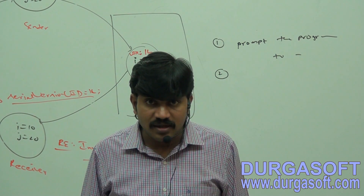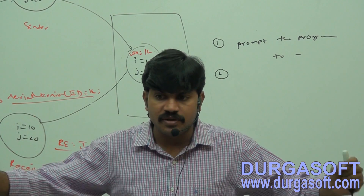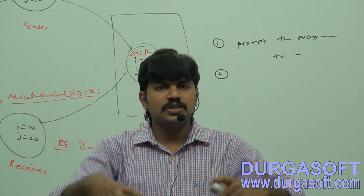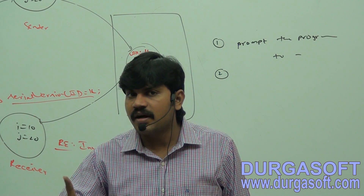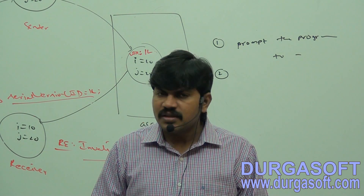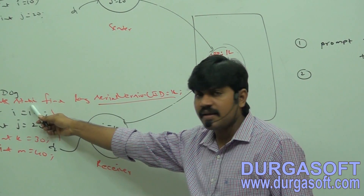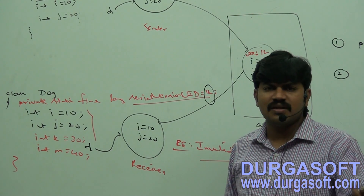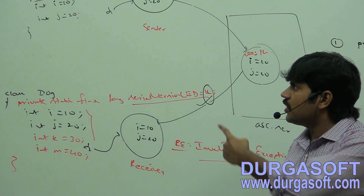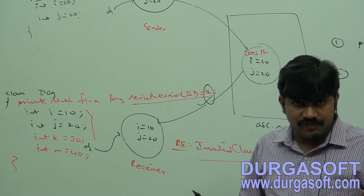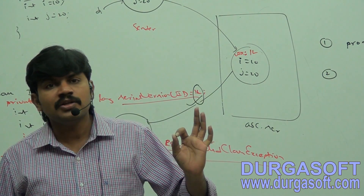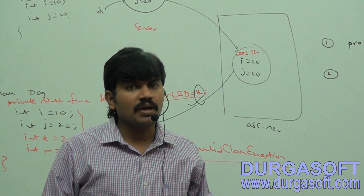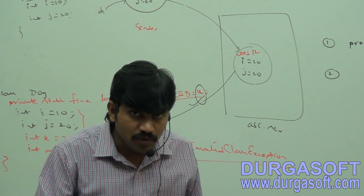In serialization and deserialization in distributed applications, sender and receiver must compulsorily use the same JVM and same .class file version — there is no guarantee of this. Even performance problems can arise. That's why, to overcome these problems, it is highly recommended to configure our own serial version UID. Simply declare: private static final long serialVersionUID = 1L — any long value like 1L, 2L, or 3L — in your Serializable implemented classes.